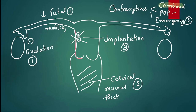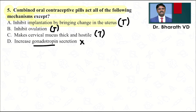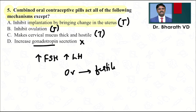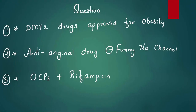The question asks which is NOT a mechanism. The options — inhibiting implantation, inhibiting ovulation, making cervical mucus thick and hostile to sperm — are all true mechanisms. 'Increase gonadotropin secretion' is NOT correct; if FSH and LH increase, LH would trigger ovulation, leading to fertility. So option D — increase gonadotropin secretion — is the answer.